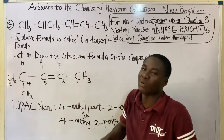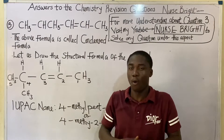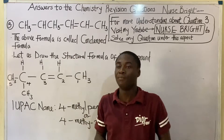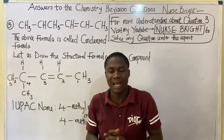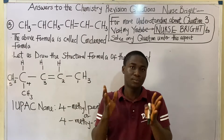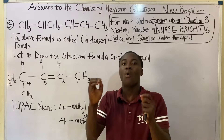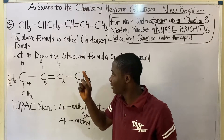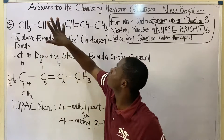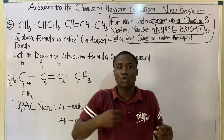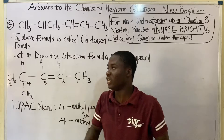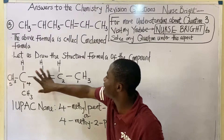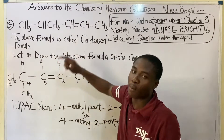This compound is expressed in its condensed form, meaning everything is condensed together. Naming it directly in that format would not be easy for those learning how to name organic compounds. That is why we need to first draw the structural form of this compound, so it becomes easier to name. Watch closely as I convert this condensed formula into structural formula format.